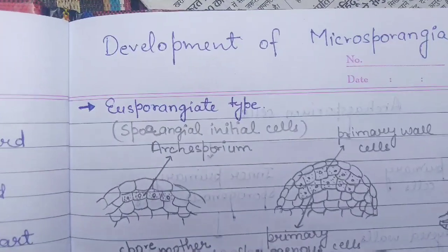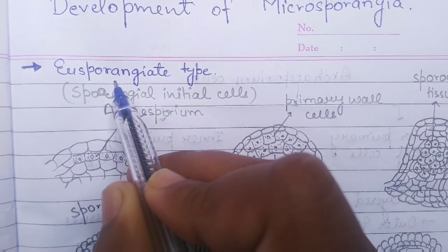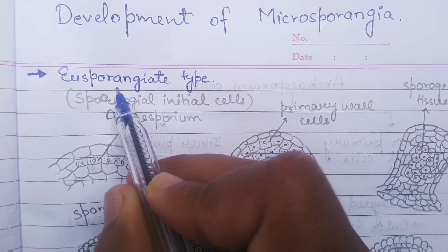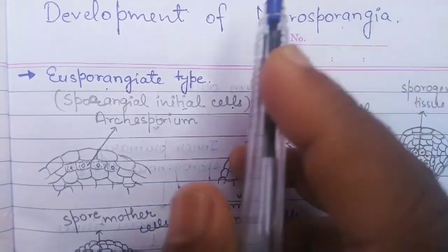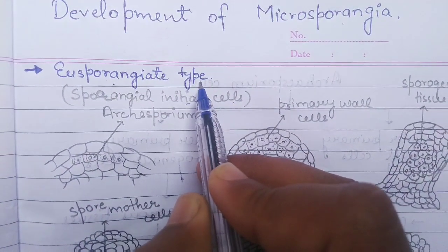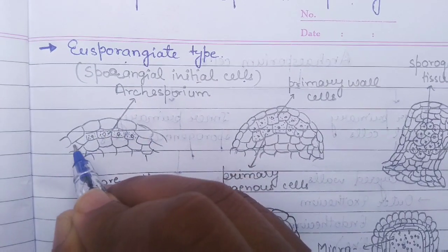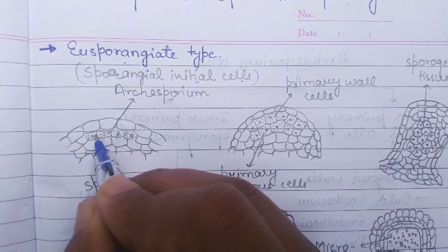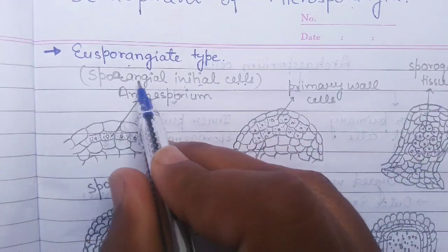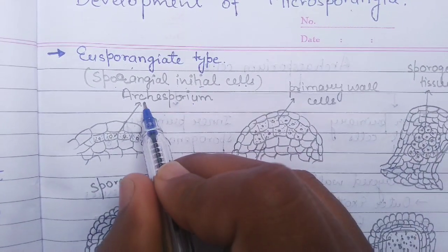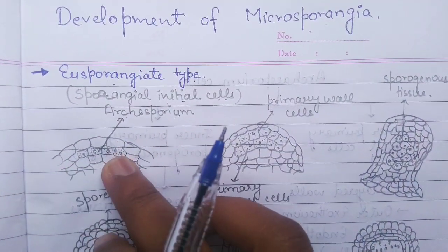Now let's study about the development of Microsporangia. The development is first of all eusporangiate type, which means the development occurs from a group of hypodermal initial cells. This epidermis is the epidermis layer of Microsporangia and beneath it is the hypodermis layer. The hypodermal cells differentiate and become meristematic — we call these hypodermal initial cells — and these are also called Archesporium. The development of Microsporangia begins from these Archesporium cells.